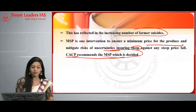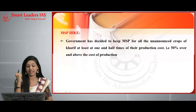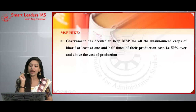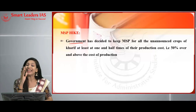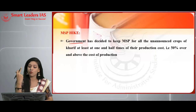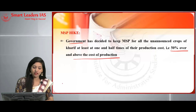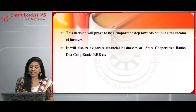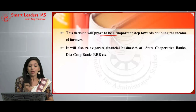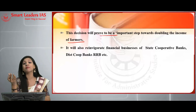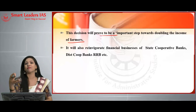We are going to see why there should be a hike or increase in minimum support price. The government has decided to keep MSP for all the mandated crops at least 1.5 times — that is, 50% above — the cost of production. This decision proved to be one of the most important steps in doubling the income of farmers, since the purpose of MSP is to help farmers earn a better income.